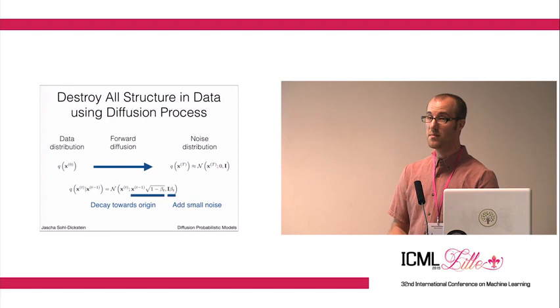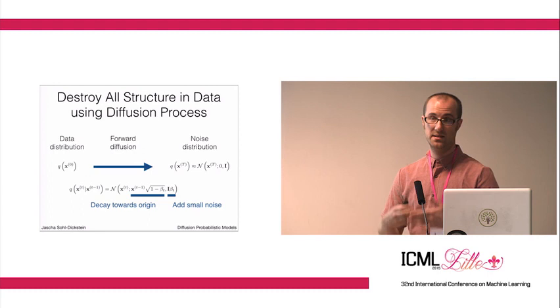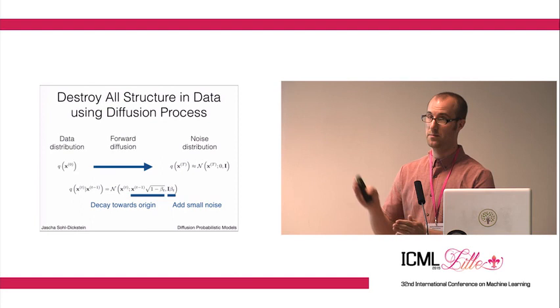This is our forward process, the Markov chain or diffusion process that starts at our data distribution and in some fixed large number T of steps turns it into a noise distribution.